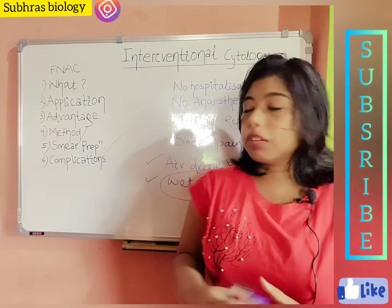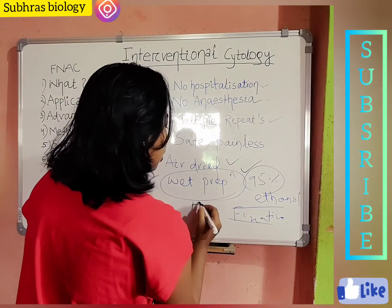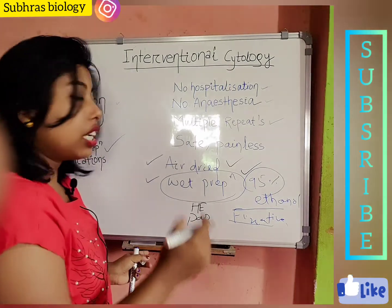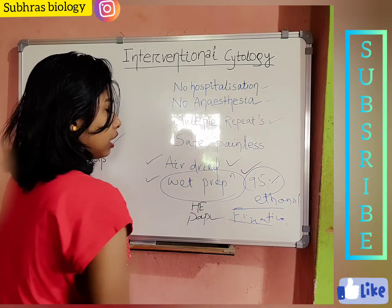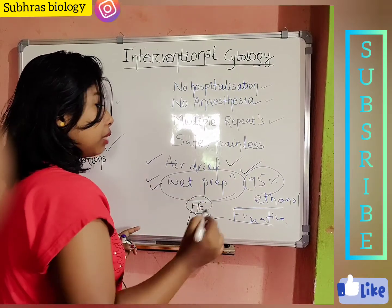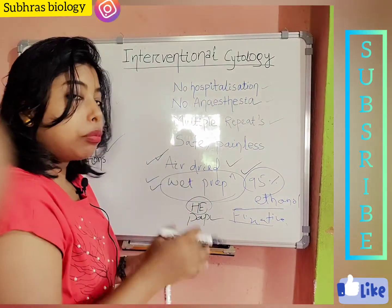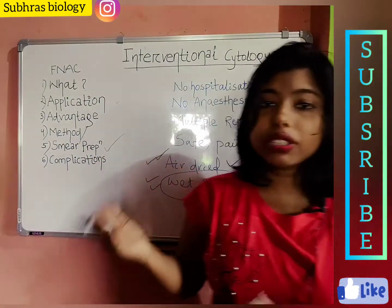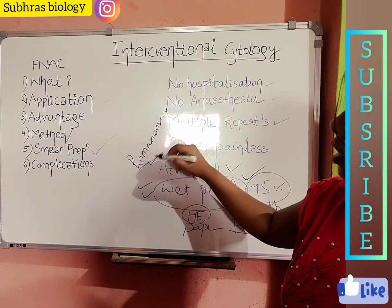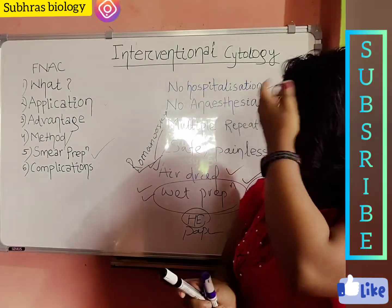For wet preparation we use H&E stain or mainly Pap stain — we will discuss the Pap staining procedure in the next video. For air-dried smears, Romanowsky stain such as Giemsa is used. Without any fixative, the air-dried smear is transferred to the lab where it is stained with Romanowsky stain.